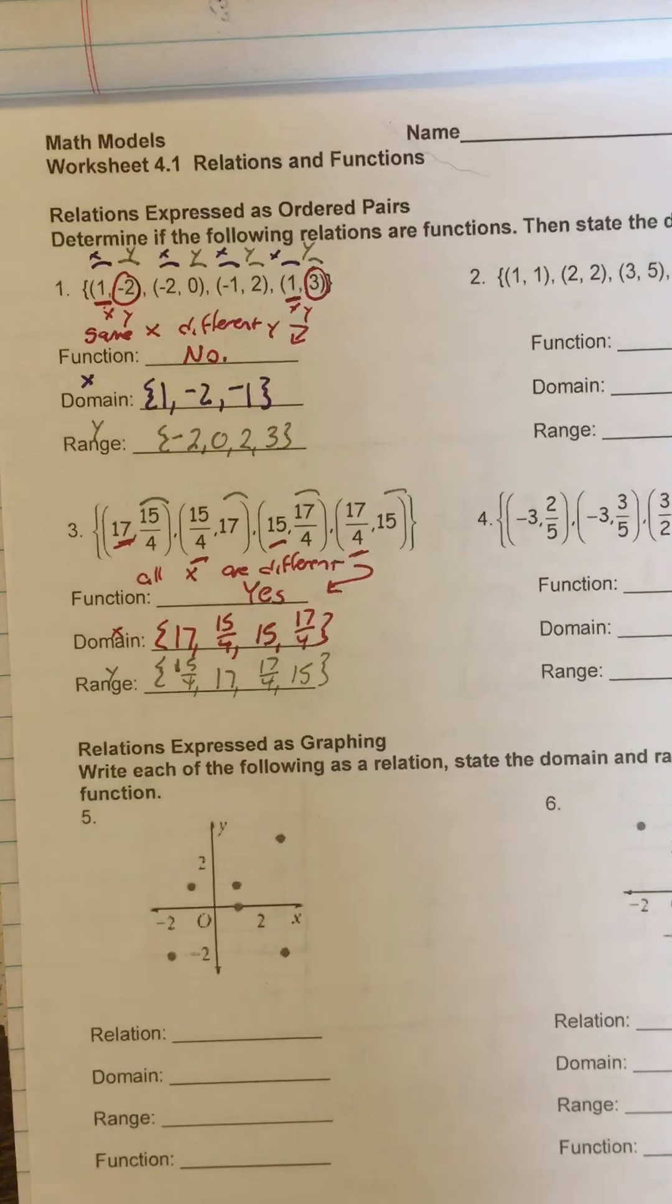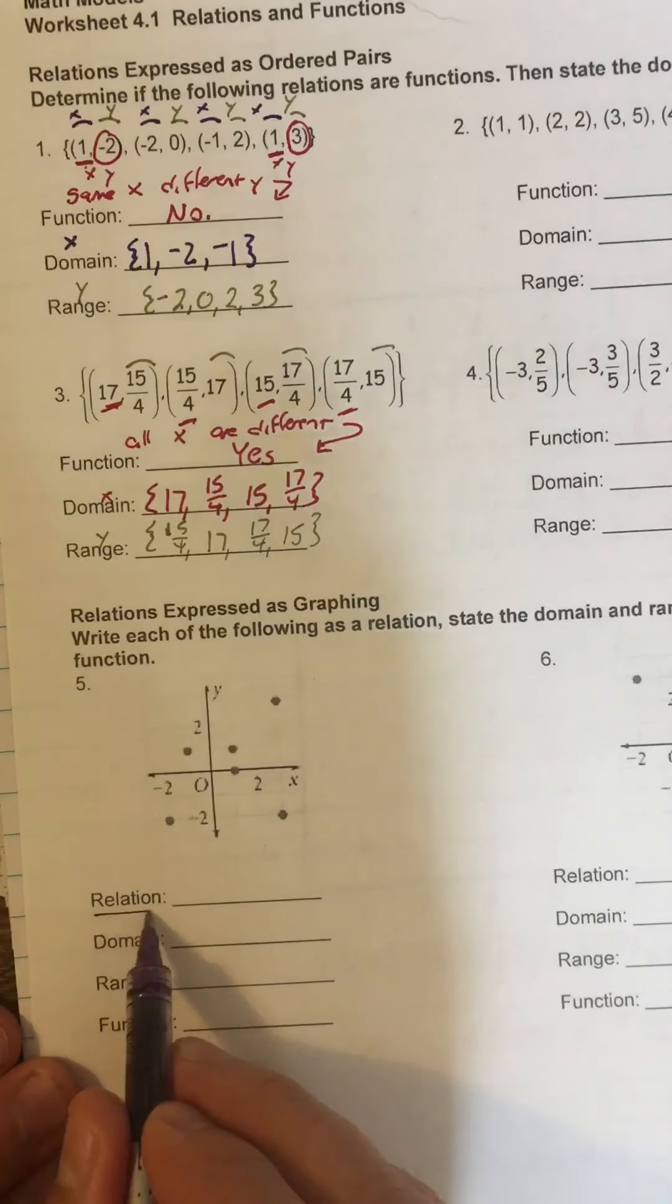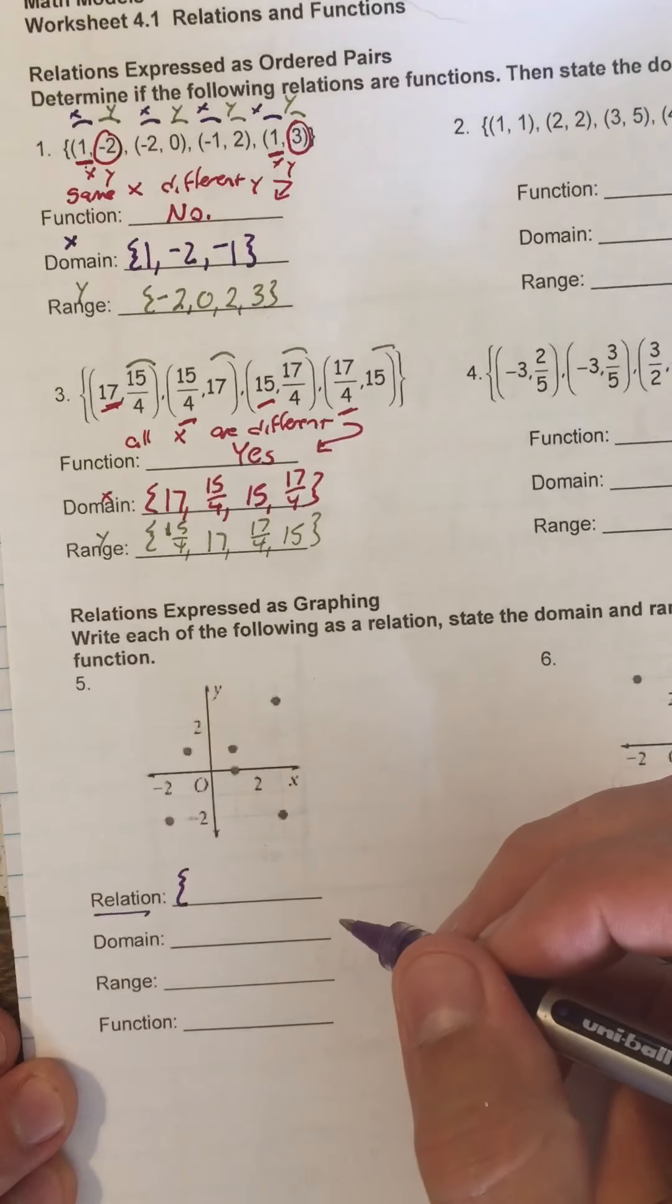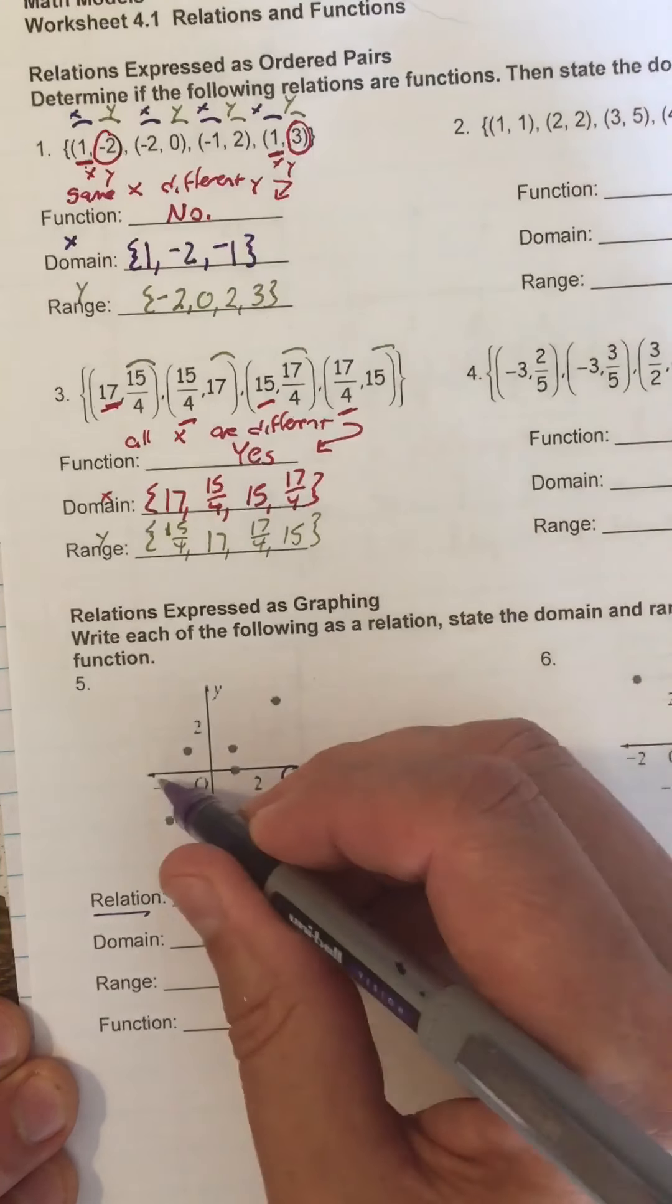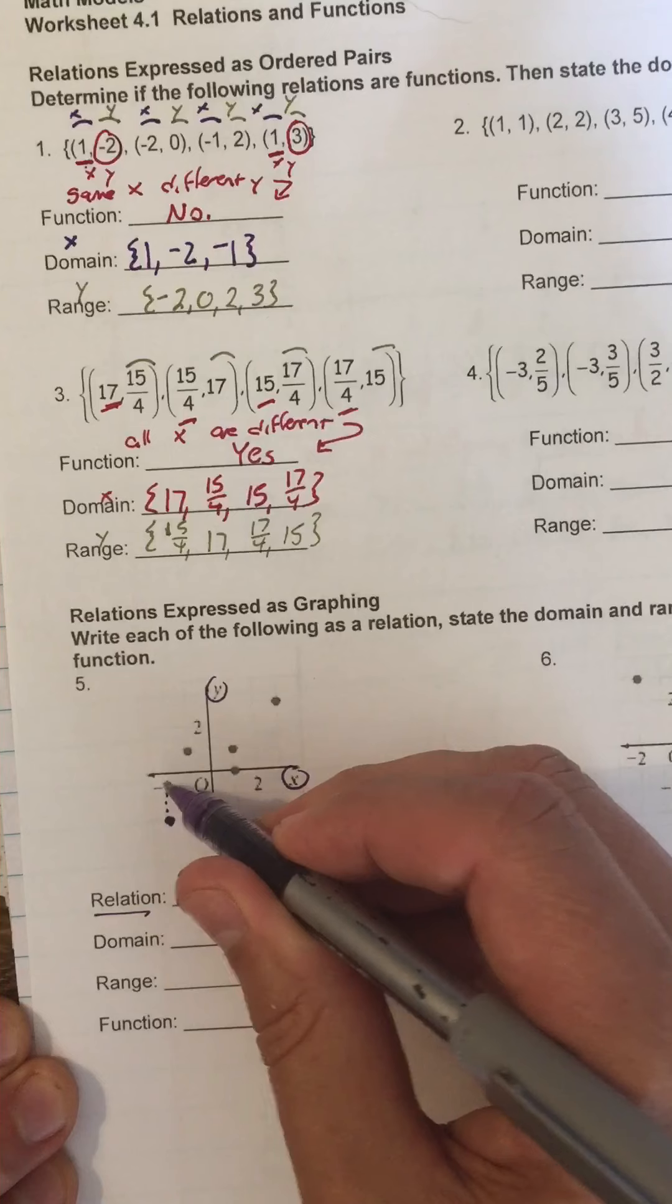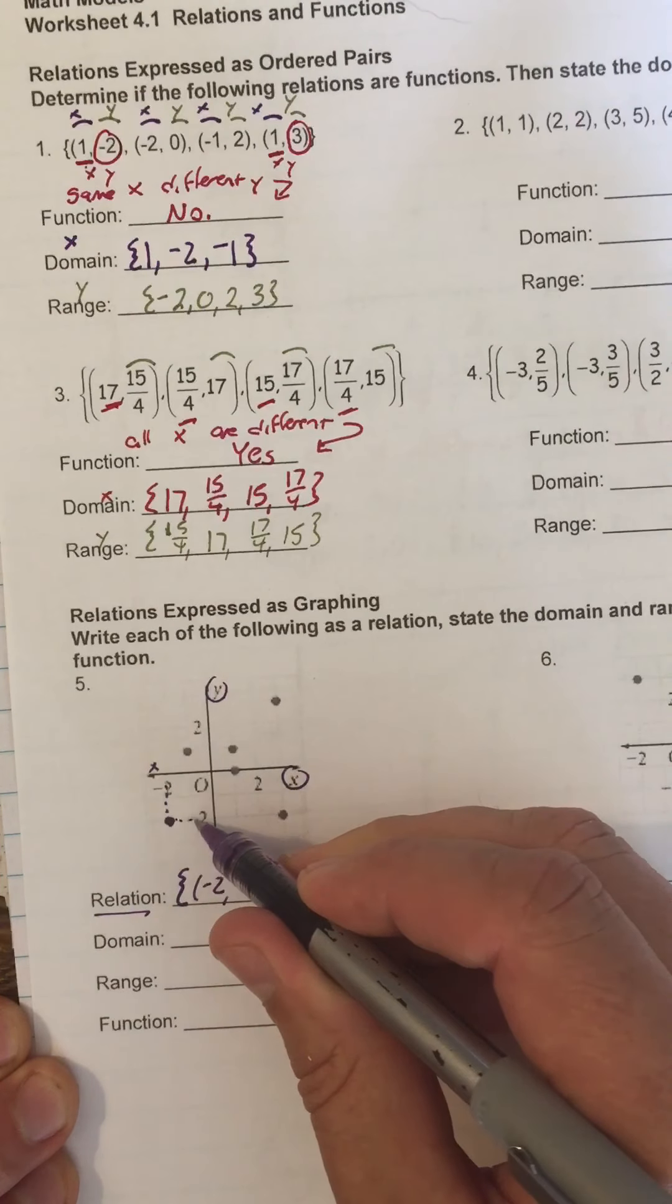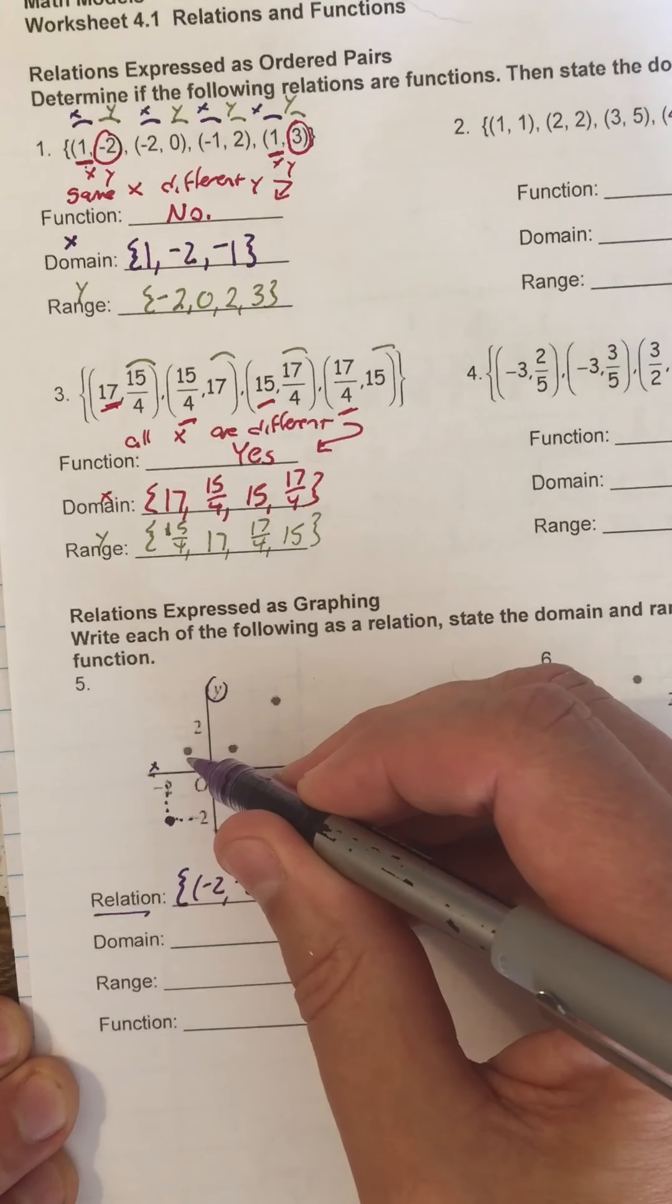And then the last one that we already did in class is this one down here, where first it asks us to write the relation. That means we have to write the set of ordered pairs that it is. So we have to know that this is x on this line, this is y on this line. So when I see this point, the x is negative 2, and the y is also negative 2.